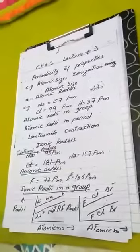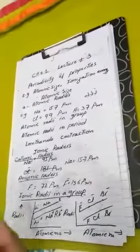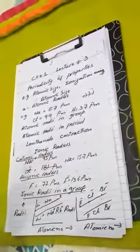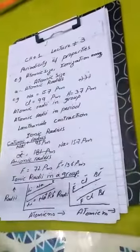Atomic radius increases from top to bottom of a group. It is due to the increase in atomic number — as seen with hydrogen, francium, and others. In this way, the force of attraction between the nucleus and its outermost shell decreases.